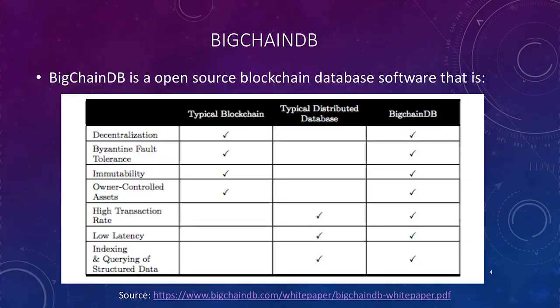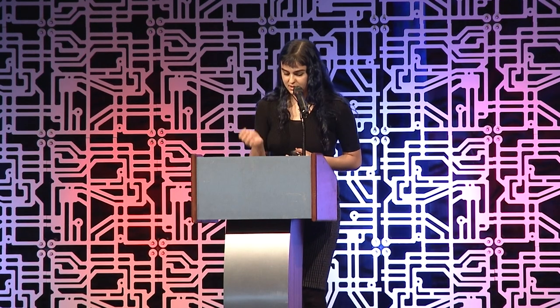Our quest for the best and most secure technology has led us to discover BigchainDB. BigchainDB is an open source blockchain software. It is decentralized — there's no single point of control, which means there's also no single point of failure. It is Byzantine fault tolerant, so up to one-third of the nodes can be experiencing arbitrary faults and the rest of the network will still provide consensus and operate smoothly.